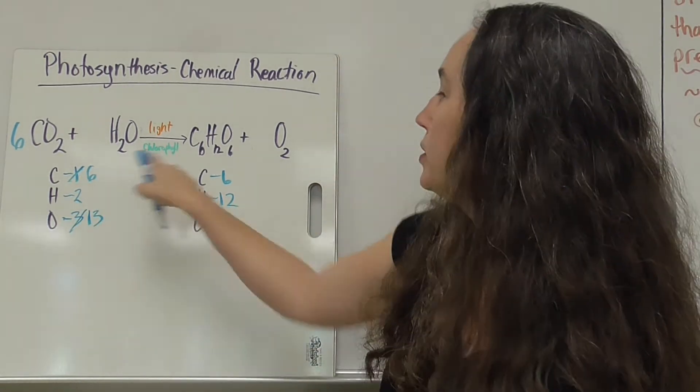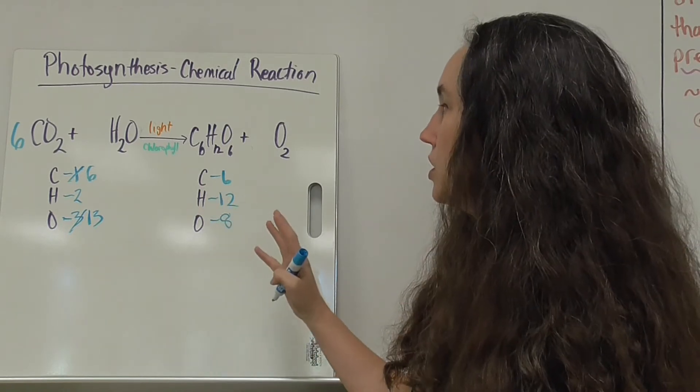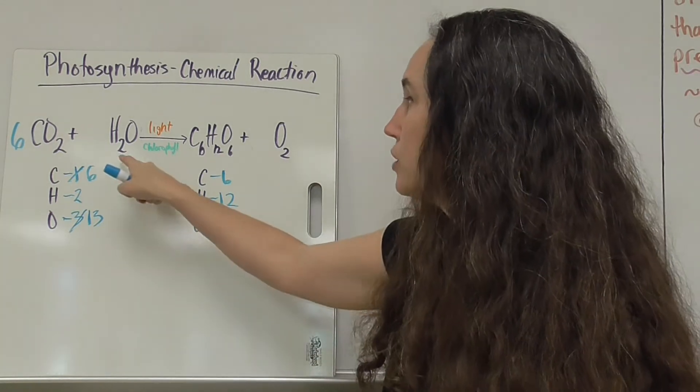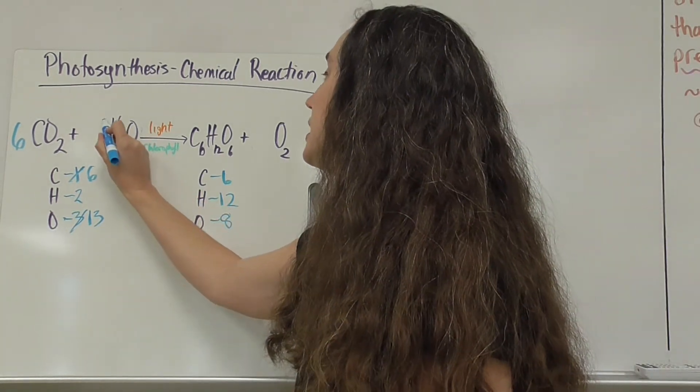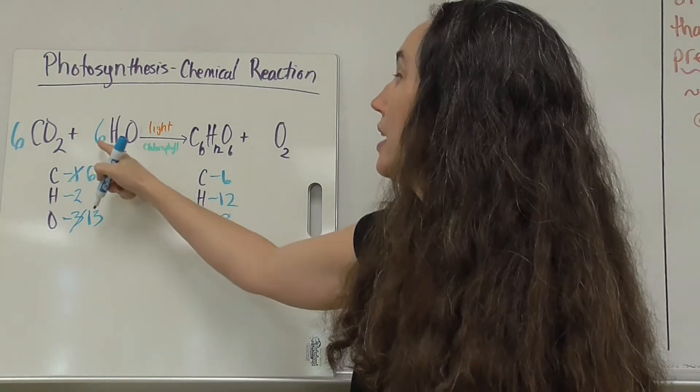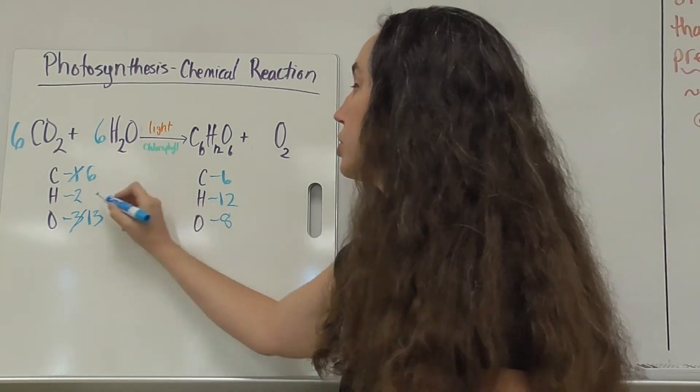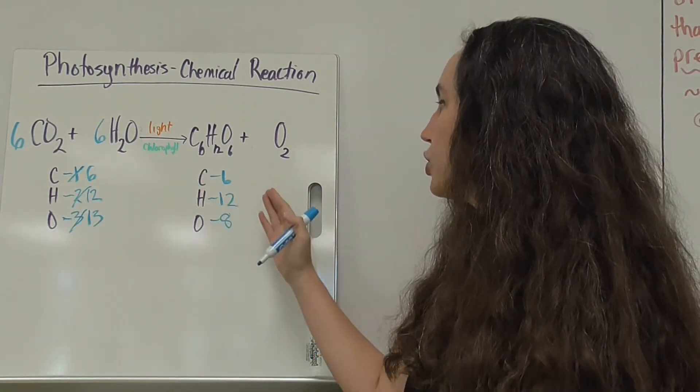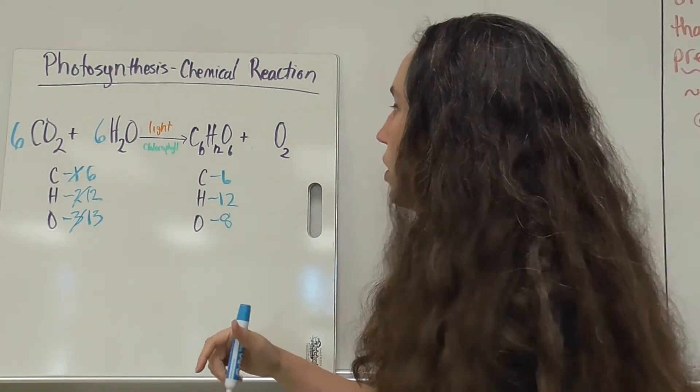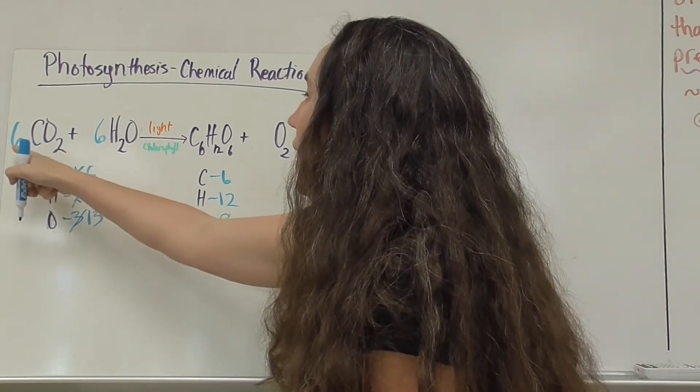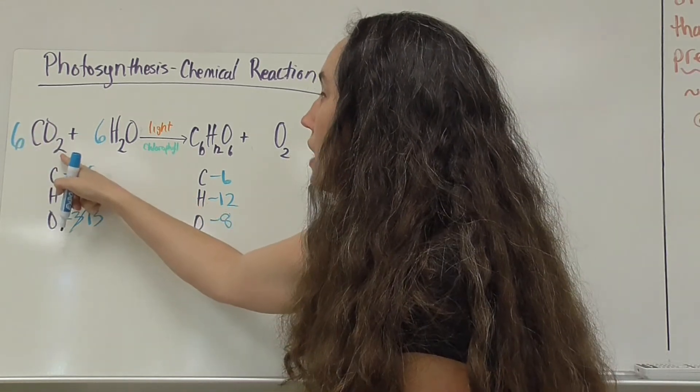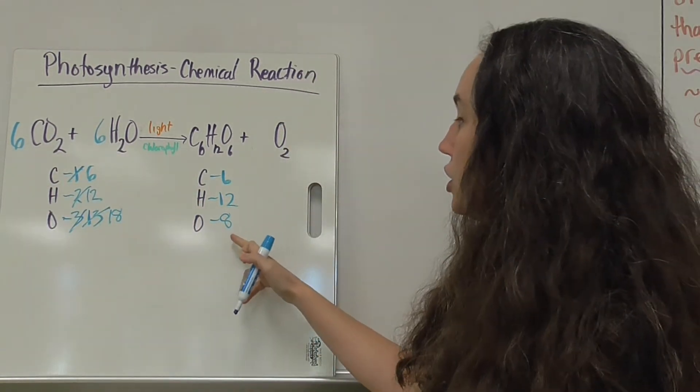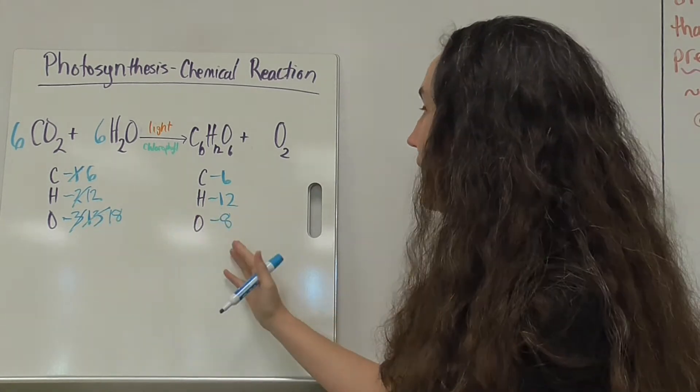So my carbons are balanced, oxygens still not, hydrogens still not. So what could I do next? If I have 12 hydrogens here and two here, I could put six as a coefficient there, giving me now 12. Six times two is 12, and now I've got balanced carbons, balanced hydrogens. It's just my oxygens that are still thrown off because now I have 12 oxygens plus six. That's now 18.